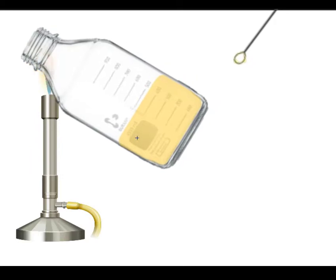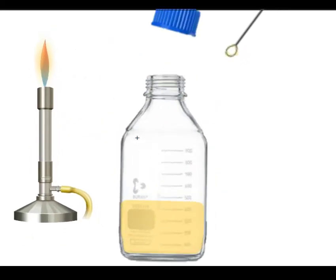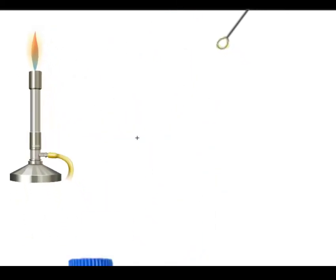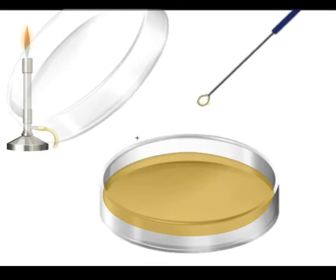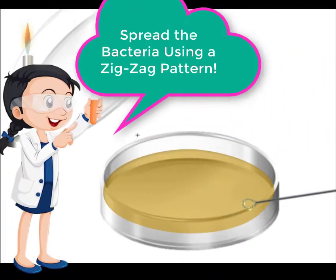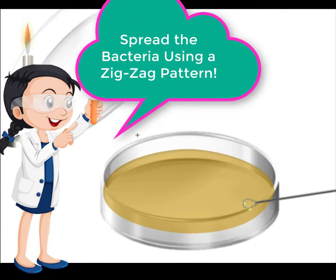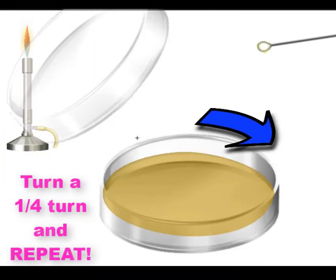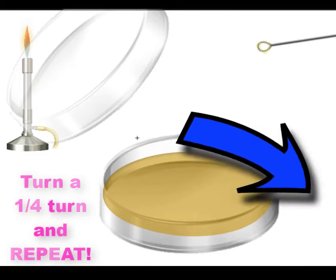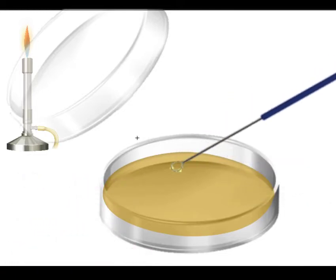Remove the lid of your petri dish and spread the bacteria onto the agar using a zigzag pattern. Turn the petri plate one quarter turn and spread the bacteria once again.